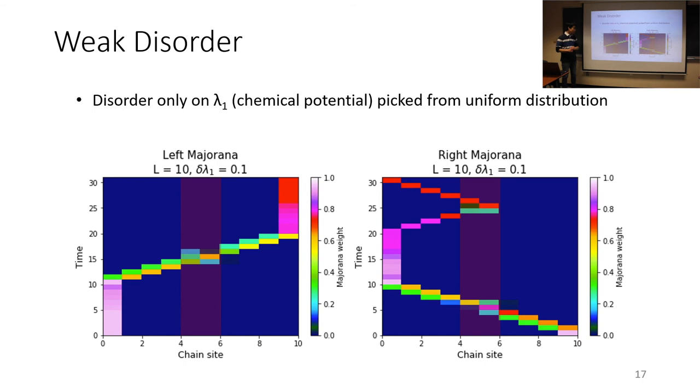So after say 1,000 disorder realizations, we end up with these plots. So we see that the braiding protocol still works, albeit the amount of error between the final and initial Majorana states are actually a little bit more significant now.